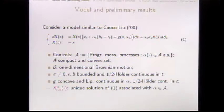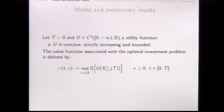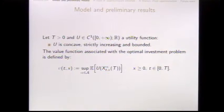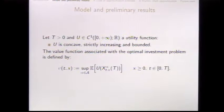Under these assumptions, for any choice of control alpha and initial time and state (t, x), we have a unique solution of the SDE. The utility function u is a C¹, concave, strictly increasing, and bounded function — essentially restricting us to negative exponential utility, though we believe the main ideas can be extended to more general cases. The optimal control problem is to compute the value function v by maximizing over all investment strategies the terminal expected utility.